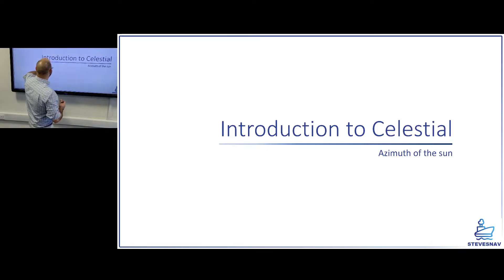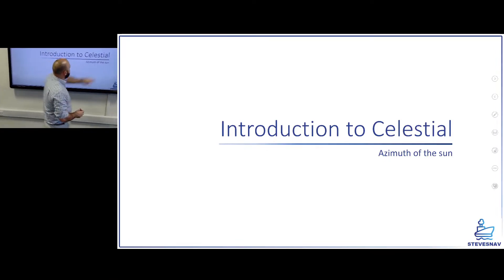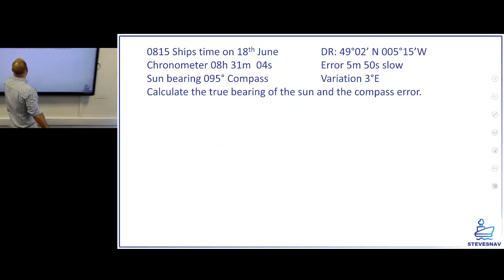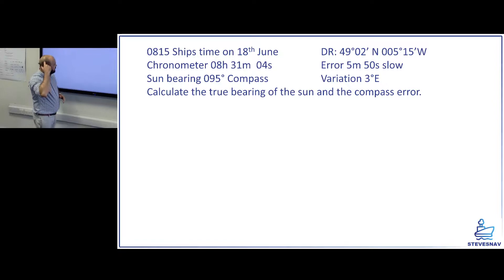So in the example we've got here, we've got a ship's time of 08:15 on the 18th June at 49°02'N and 005°15'W. The chronometer is 08:31:04 with an error of 5 minutes 50 seconds slow. It tells us the compass bearing of the sun at the time and the variation and the question asks us calculate the true bearing of the sun and the compass error.